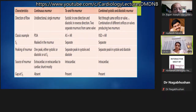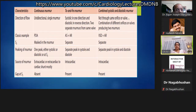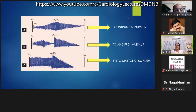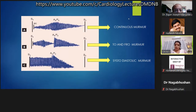These are classical examples of continuous, to-and-fro, and combined systolic-diastolic murmurs presented for revision purposes. A diagrammatic representation shows the shapes of the three murmur types: a continuous murmur peaks around S2; a to-and-fro murmur passes through the same orifice but has two different peaks; and systolic-diastolic murmurs are two entirely different murmurs.